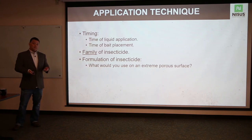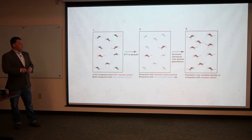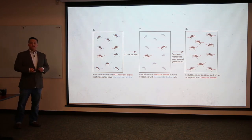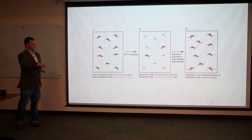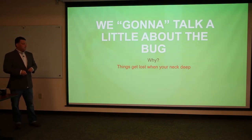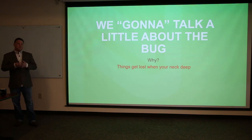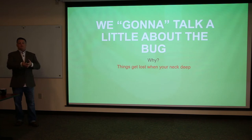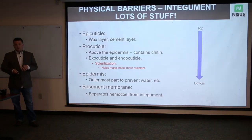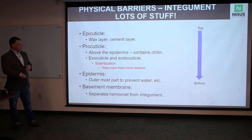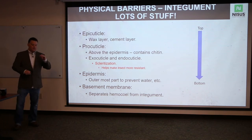DDT is sprayed on the pest population, resistance develops, insects mate and produce new offspring, and the cycle repeats over and over using the same chemical. Let's talk about what the insect has in its defense mechanisms to prevent your chemistry from killing it. Insects have what's called an epicuticle and a procuticle — think of a cockroach or grasshopper — very thick and hard. Underneath is the basement membrane, and then the internal hemolymph, which is their blood.